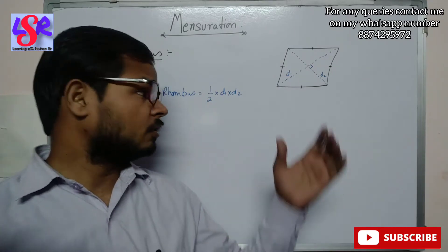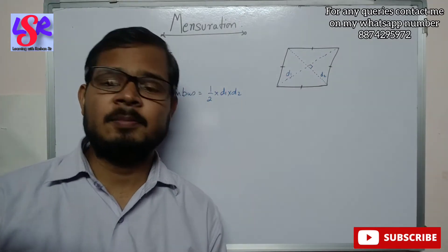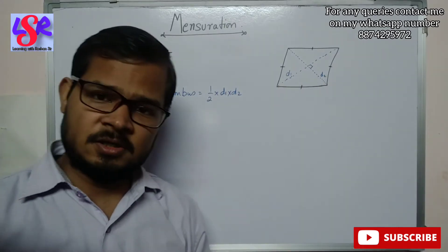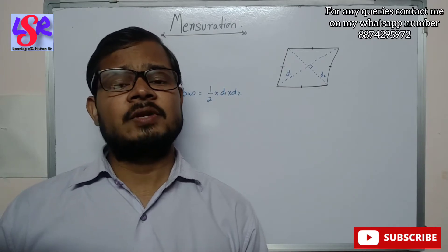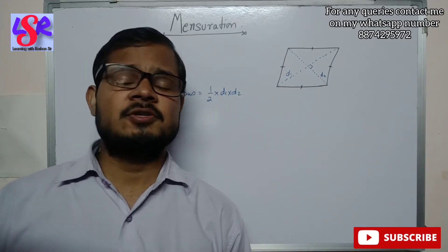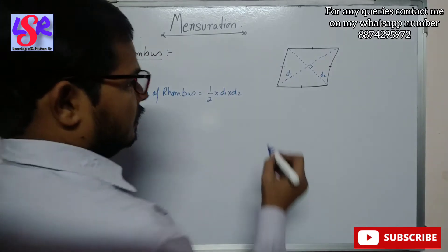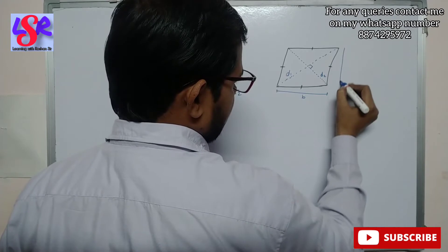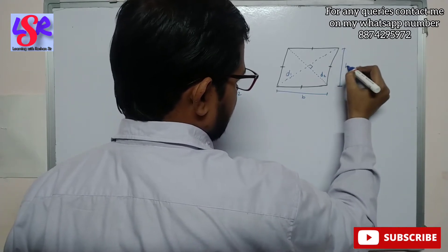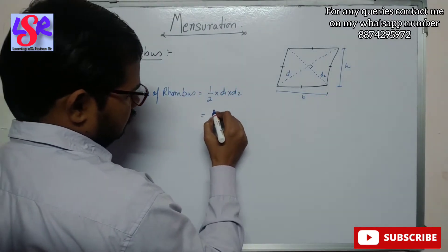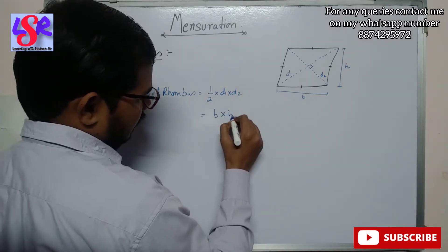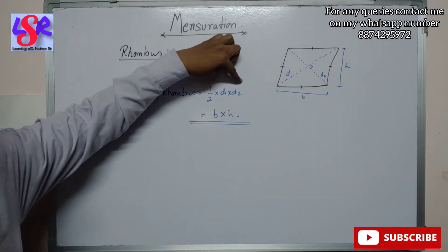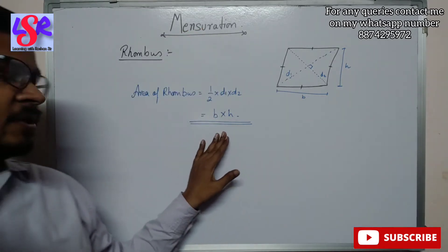A rhombus is also a type of parallelogram. In a parallelogram only opposite sides are equal, but in a rhombus all sides are equal. We can also calculate the area of a rhombus using the parallelogram formula: base into height. So there are two formulas for the area of a rhombus — the first is half d1 into d2, and the other is base into height.